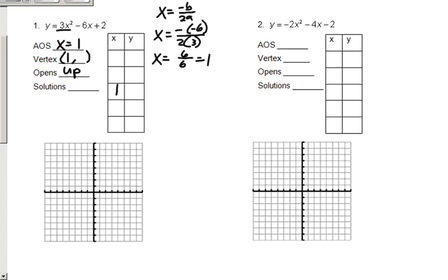Now, to find the y value here, I'm going to take 1, and I'm going to plug it into the original equation. y equals 3 times 1 squared minus 6 times 1 plus 2. Well, this gives me 3 minus 6 plus 2. y equals negative 1. So now, just by doing that, pretty simply, I have my vertex, I have my axis of symmetry, I have the middle point in my table.